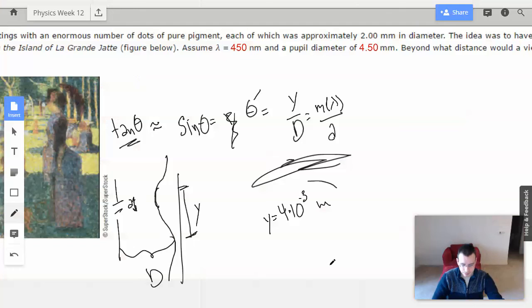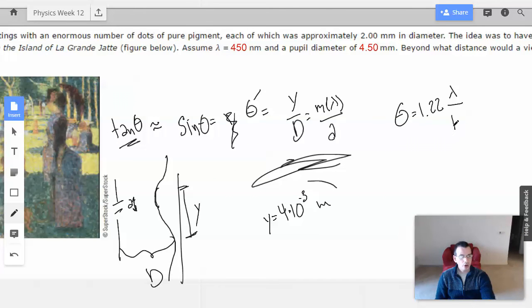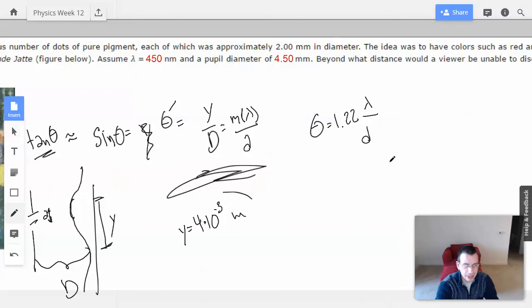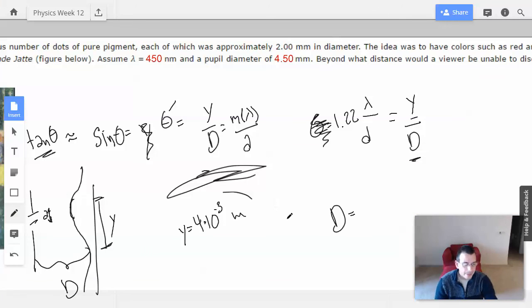Theta equals 1.22 times lambda over d. D is what we're looking for right here. D is the distance that we are from the painting, y is the distance between the dots, lambda is the wavelength, and d is the diameter of the pupil. So D equals y times d over 1.22 times lambda.